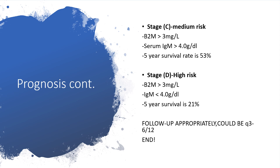Stage D is high risk: beta-2 microglobulin greater than 3 mg/L and IgM less than 4 g/dL, with a 5-year survival rate of only 21%.